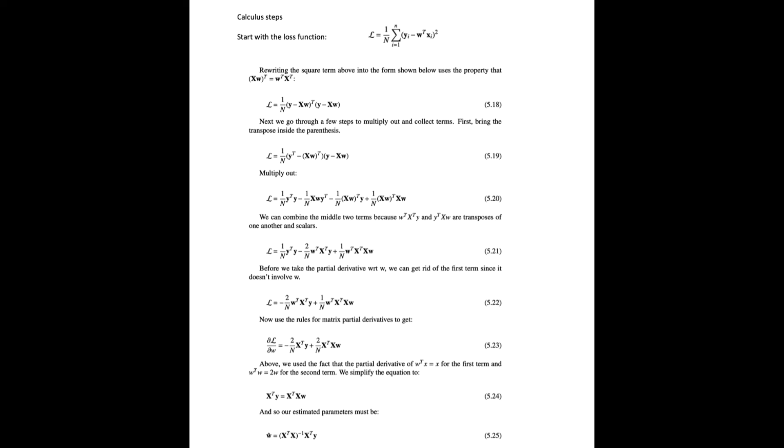Finding the inverse matrix is an O n cubed operation. So R uses optimization methods to find the parameters. R uses QR matrix decomposition, which decomposes the matrix to an upper triangle matrix, which is more easily solved.